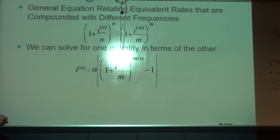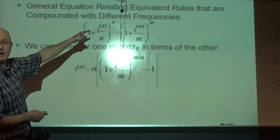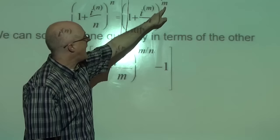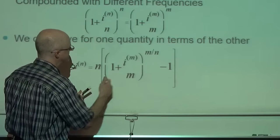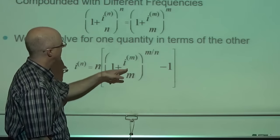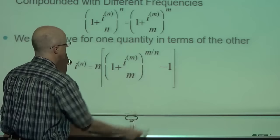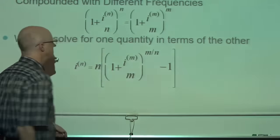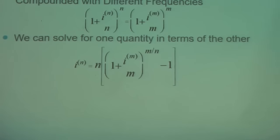Solving for i_N: raise both sides to the 1/N power to get rid of the N (making it 1), giving an M/N power on the other side. Then subtract 1 from both sides and multiply by N. Despite display issues with fraction bars in the slides, this gives i_N in terms of i_M.